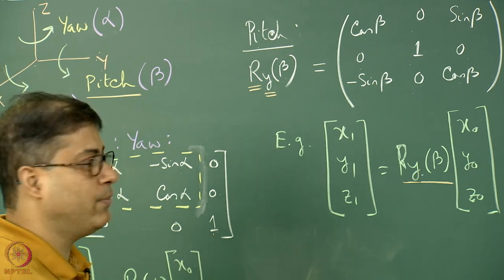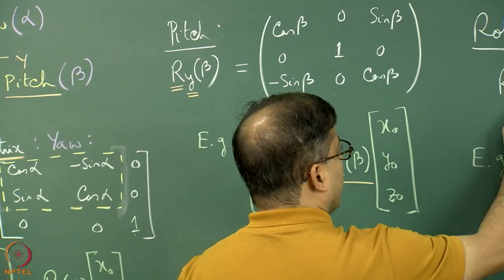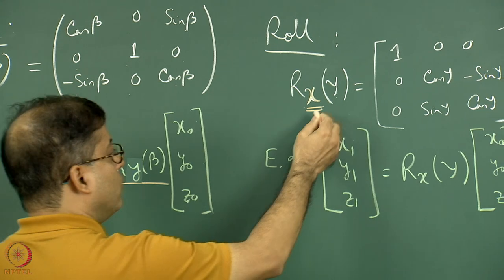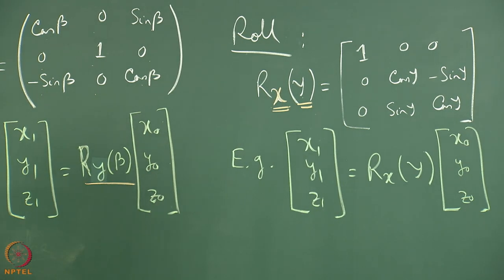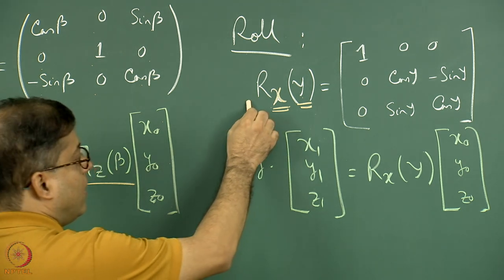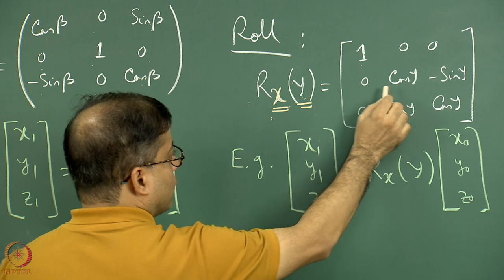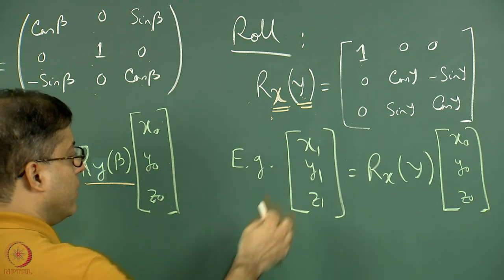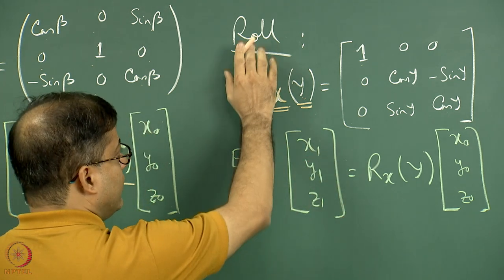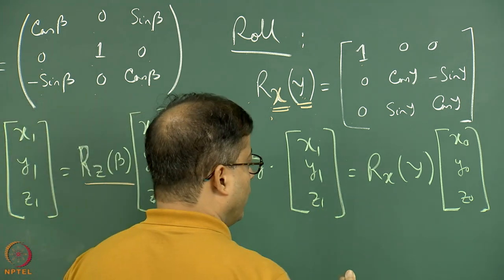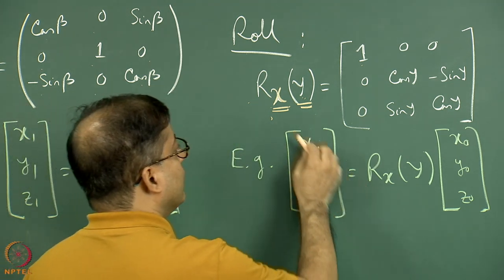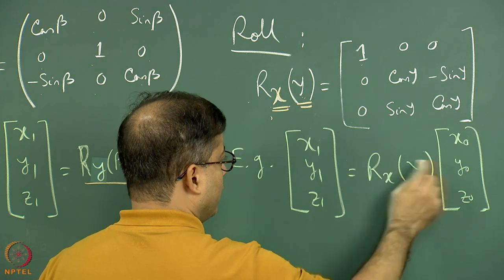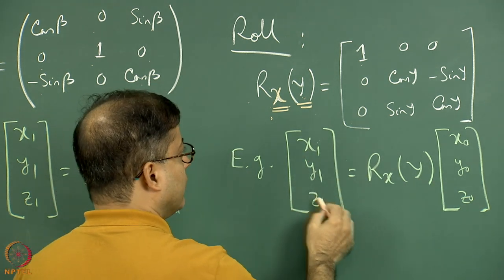For roll—gamma amount of anti-clockwise rotation about the x-axis—the rotation matrix Rx(gamma) is: [1, 0, 0 / 0, cos gamma, -sin gamma / 0, sin gamma, cos gamma]. The new coordinate x1, y1, z1 is given by Rx(gamma) multiplied by the old coordinate column vector [x0, y0, z0]. This applies when only this roll rotation has occurred with no other movement.